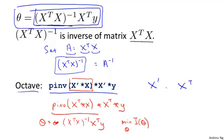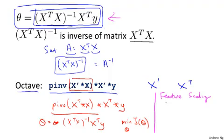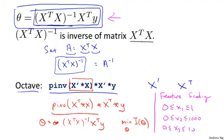One last detail: in an earlier video I talked about feature scaling — getting features to be on similar ranges of values. If you're using the normal equation method, feature scaling is not actually necessary. It's okay if feature x1 ranges from 0 to 1, x2 ranges from 0 to 1000, and x3 ranges from 0 to 10^-5. However, if you are using gradient descent, then feature scaling is still important.